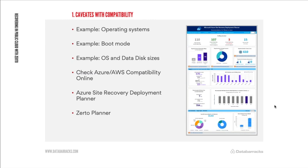There is also a Zerto planner, which is more about planning for Zerto usage inside Azure or AWS. It looks at historic stats and tells you the bandwidth requirements needed to replicate your VMs, what journal sizes will be for one or five days, and lets you plan for storage costs in Azure as well as replica disk size. When doing deployments, I'll combine both tools — the ASR Deployment Planner for compatibility issues and the Zerto planner for costings, space requirements, and bandwidth.